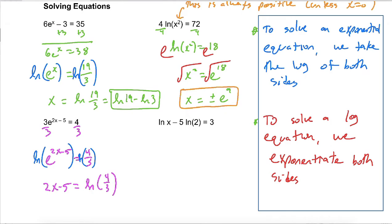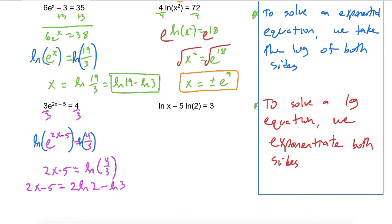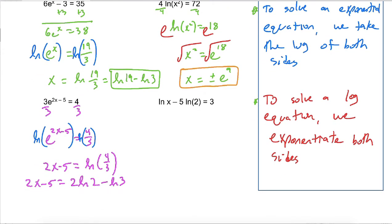In fact, I will do that. So 2x minus 5 equals the ln of 4. And remember that 4 is 2 squared, so that is 2 ln of 2 minus ln of 3. And then I'm just going to get x by itself. So I'm going to add 5 to both sides and then divide by 2 on both sides. So x equals 2 ln of 2 minus ln of 3 plus 5 over 2. And that's your answer.